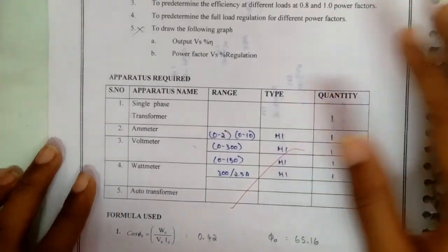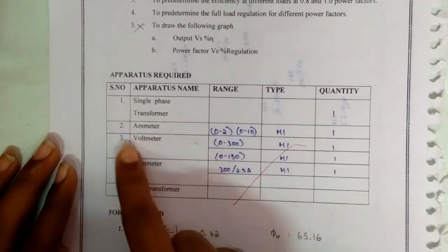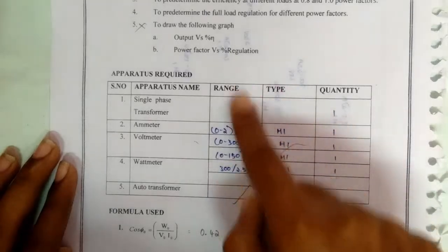The apparatus required for this experiment will be single phase transformer, ammeter, voltmeter, wattmeter, and autotransformer in the corresponding ranges.